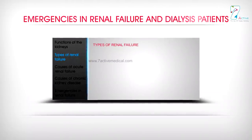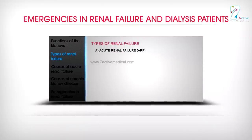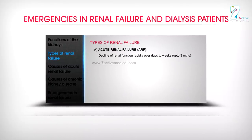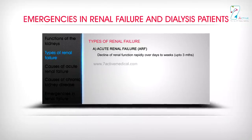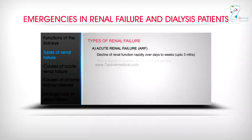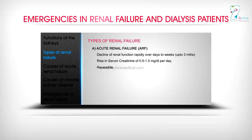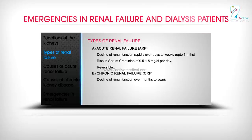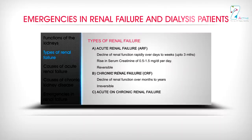Types of renal failure: A) Acute renal failure (ARF) — decline of renal function rapidly over days to weeks, up to 3 months, with a rise in serum creatinine of 0.5 to 1.5 mg/dL per day; reversible. B) Chronic renal failure (CRF) — decline of renal function over months to years; irreversible. C) Acute-on-chronic renal failure — caused by dehydration, drugs, infection, obstruction, etc.